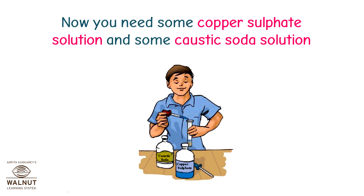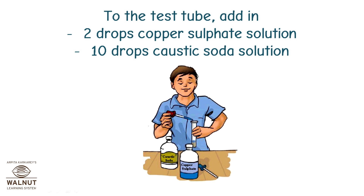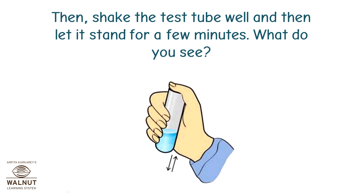Shake the test tube. Now, you need some copper sulfate solution and some caustic soda solution. To the test tube, add 2 drops of copper sulfate solution and 10 drops of caustic soda solution. Then shake the test tube well and let it stand for a few minutes.